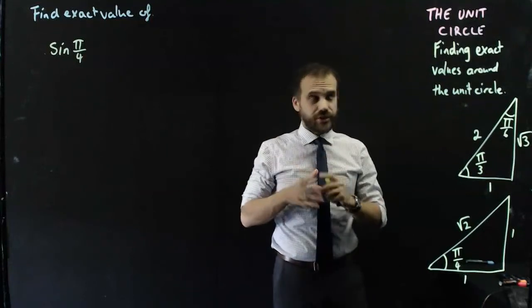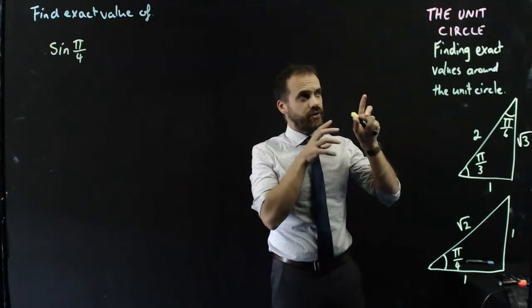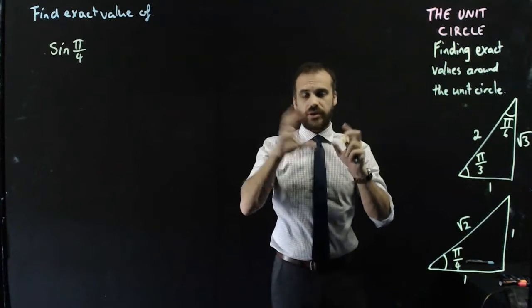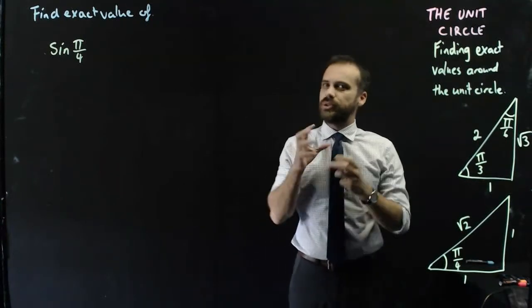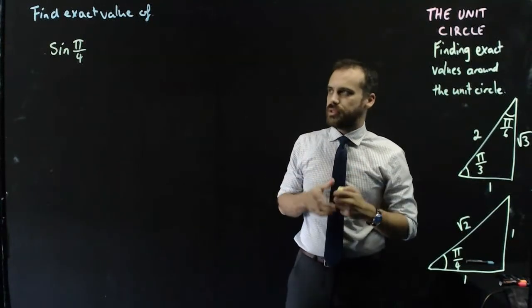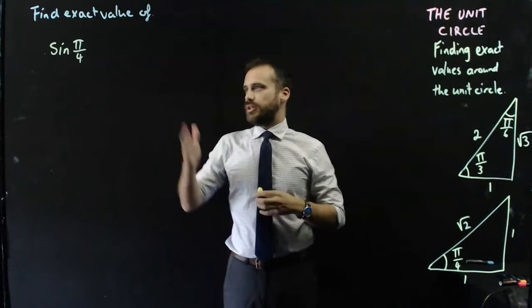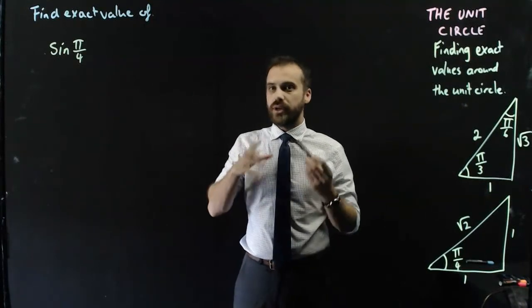Alright, so now we're really going to do something here. We've got the unit circle, and we're going to find exact values all the way around the unit circle. We're going to do a lot of examples here. So, find the exact value of sine pi on 4.